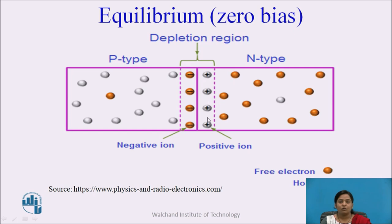Due to these positively charged ions, there is a positive potential on the N-side and negative potential on the P-side. So a potential difference is generated here, which is called the built-in potential or potential barrier. Once this depletion region is generated, the majority charge carriers cannot cross the junction.